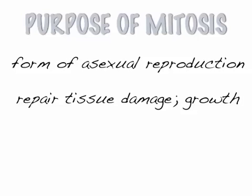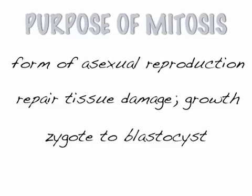And growth. A zygote is the cell made when sperm and egg first meet. In order for the zygote to grow into an embryo and a fetus, it needs to do mitosis. It performs mitosis and becomes a ball of cells called the blastocyst.